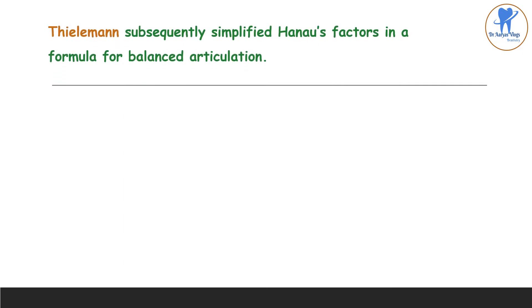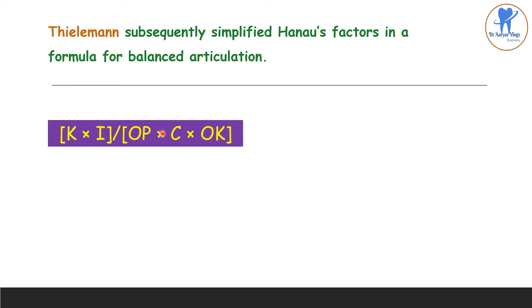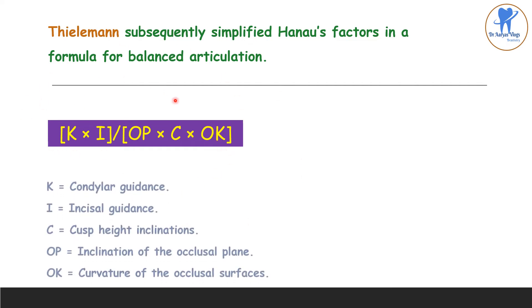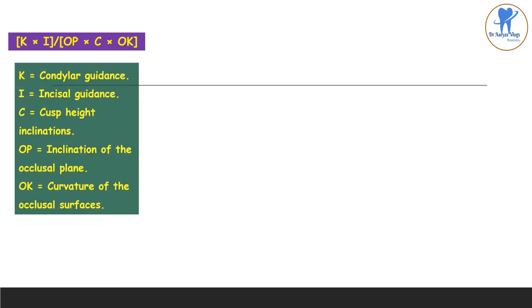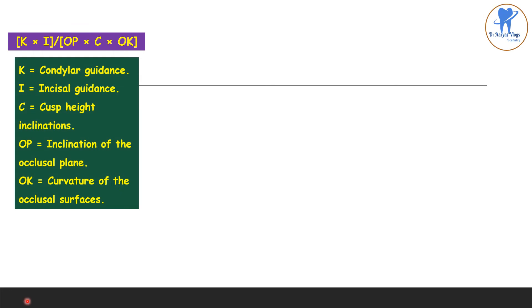Tillman subsequently simplified Hanau's factors in a formula for balanced articulation. That formula is: k × i / op × c × ok. Here, k is condylar cadence, i is incisal cadence, c is cusp height inclinations, op is the inclination of the occlusal plane, and ok is the curvature of the occlusal surfaces.